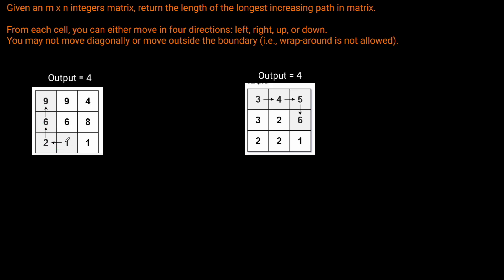From this nine we can't go to the adjacent nine because it's not increasing — it's staying the same. The six is decreasing, so that's not a valid path either. This four can go to the nine, but after that we can't go any further. It could go to this eight, but after that we can't go any further because there's no increasing path.